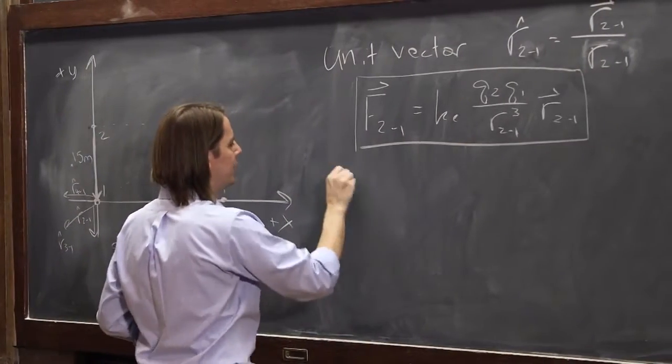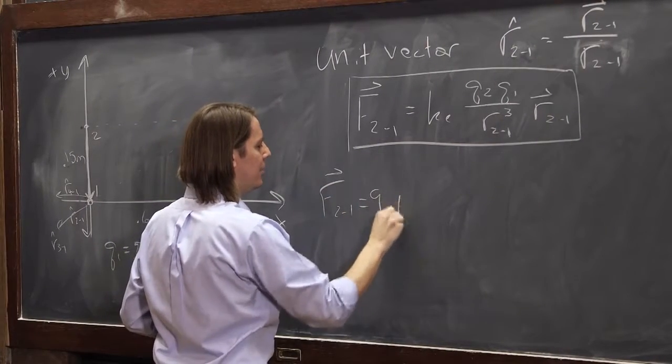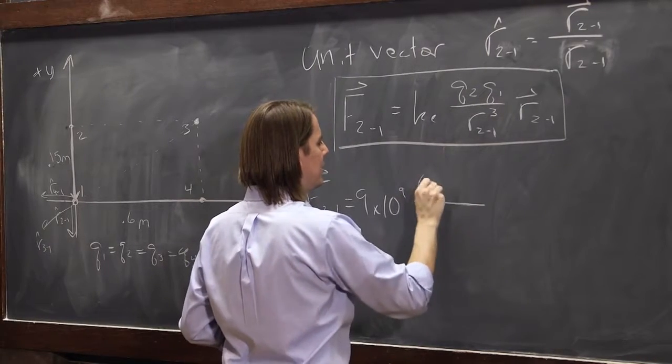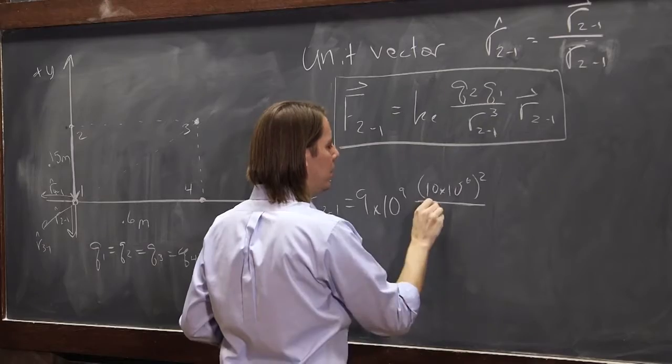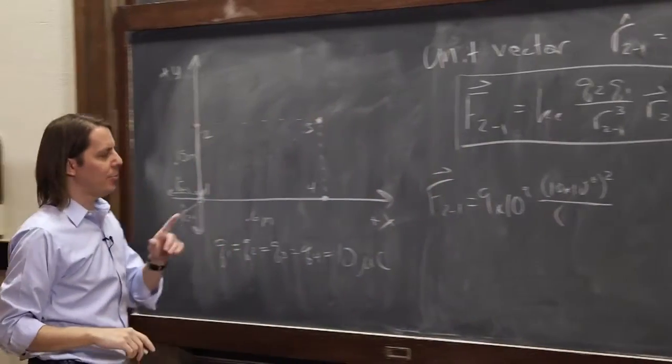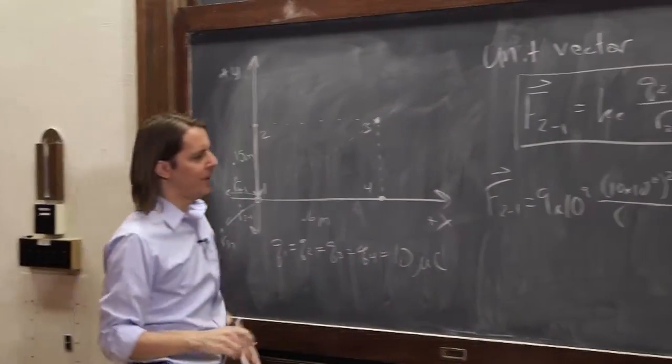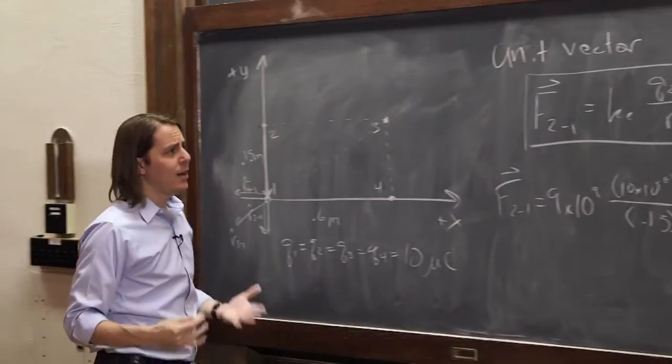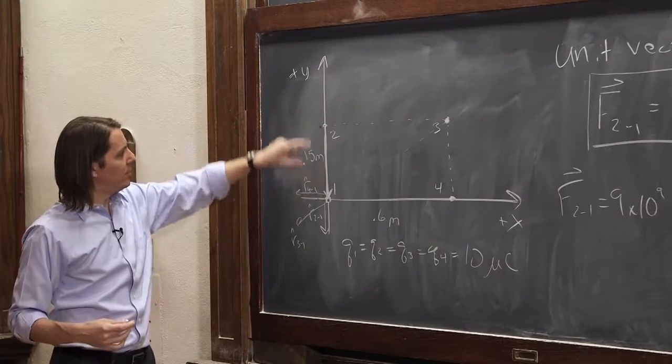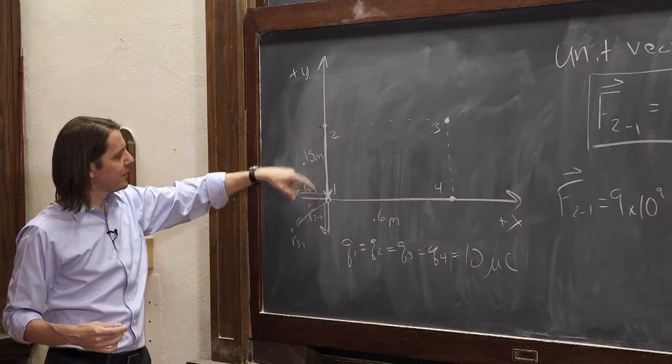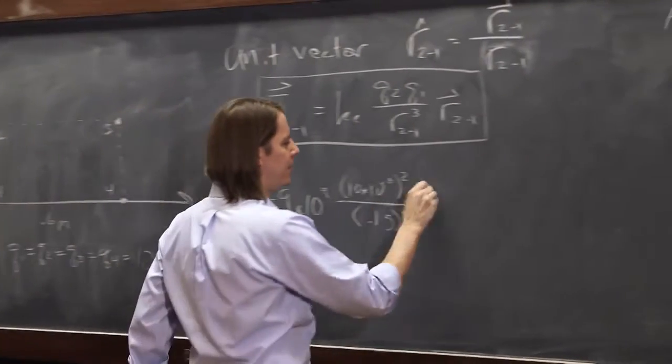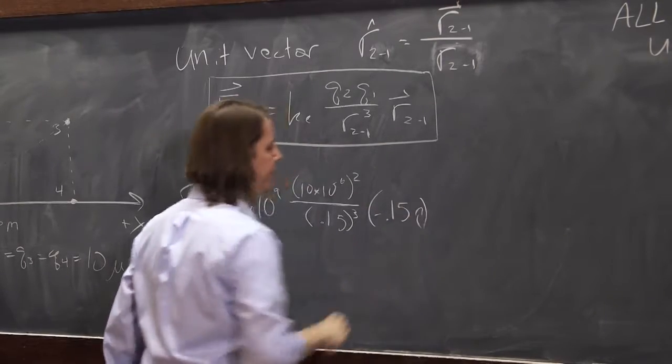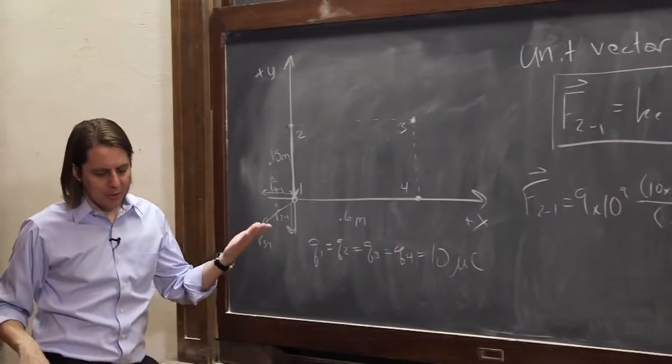Okay? So let's write f 2,1 is 9 times 10 to the 9. Again, this is all MKS units. Times 10 times 10 to the minus 6 squared over the separation cubed, which is 0.15 cubed. And now we just write the vector r 2,1. Well, it's 0.15 and it's pointing down, so it's negative 0.15 in the j hat direction.